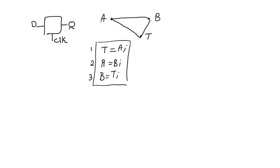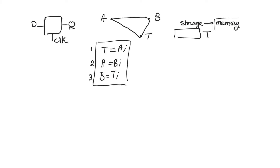So, to perform variable swap, we must have intermediate storage for the value T — there has to be storage. Storage immediately tells us that we have memory. Having memory or storage is necessary to perform a sequence of operations. If we need sequencing, if we need something that follows a certain order, we cannot use combinational circuits; we have to use sequential circuits. They are called sequential because they allow us to perform a sequence of operations.